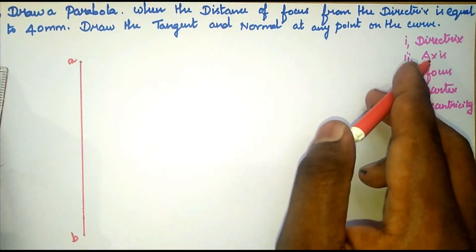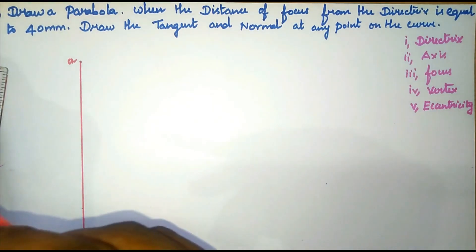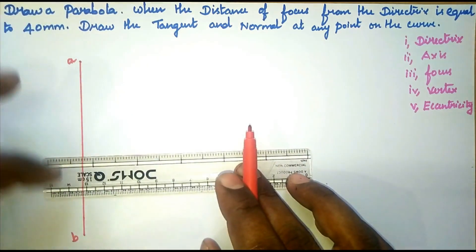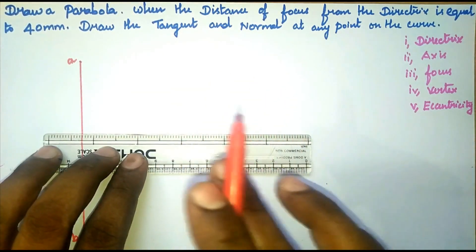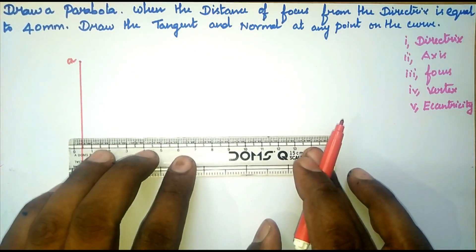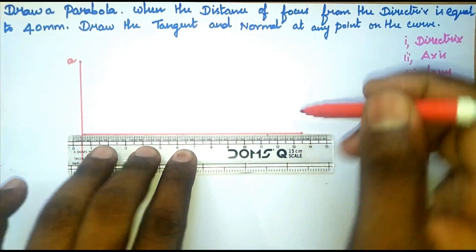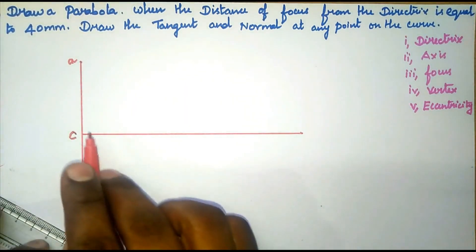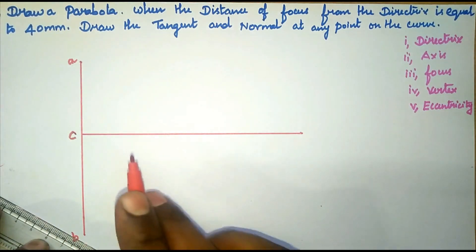Next, we draw the axis. The axis is a line that passes through the focus and is perpendicular to the directrix. The directrix line is perpendicular to the axis line. On the axis line, the focus point will be placed. Name the axis line as C.